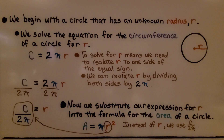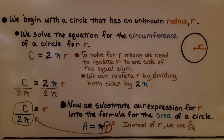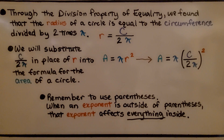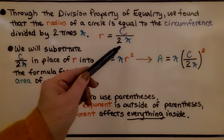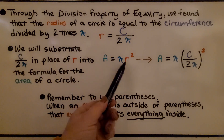Now we substitute our expression for r into the formula for the area of a circle. We know that area equals πr², and this r — just the r alone, not squared — is equal to the circumference divided by 2π. So instead of r in the area formula, we use C divided by 2π. Through the division property of equality, we found that the radius equals the circumference divided by 2π, and we substitute that in place of r.